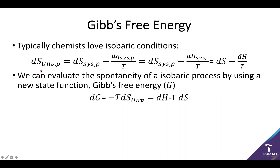So instead what we do is the same thing we did for Helmholtz — we multiply by negative T. This will isolate our expression as negative T times the change in universal entropy, which is the same thing as the change in Gibbs free energy, which can again be given by the change in enthalpy minus the temperature times the change in entropy. This is a very similar expression to what we derived for Helmholtz.